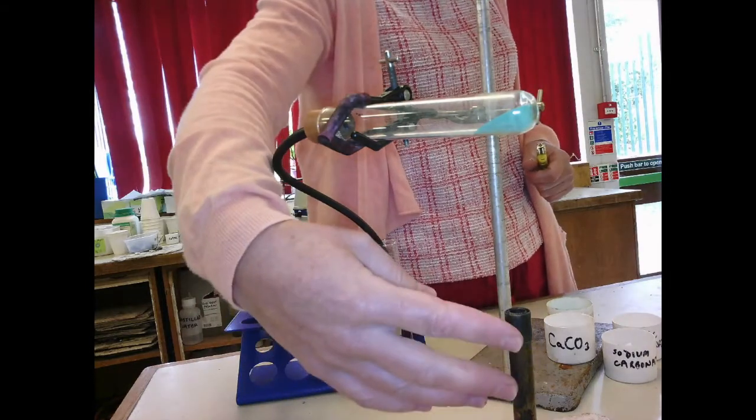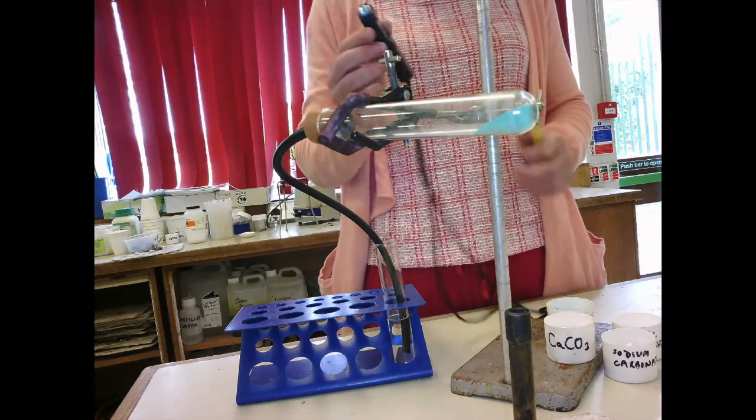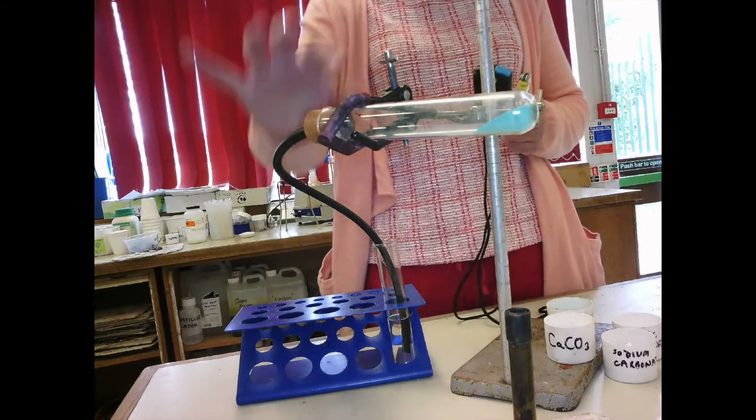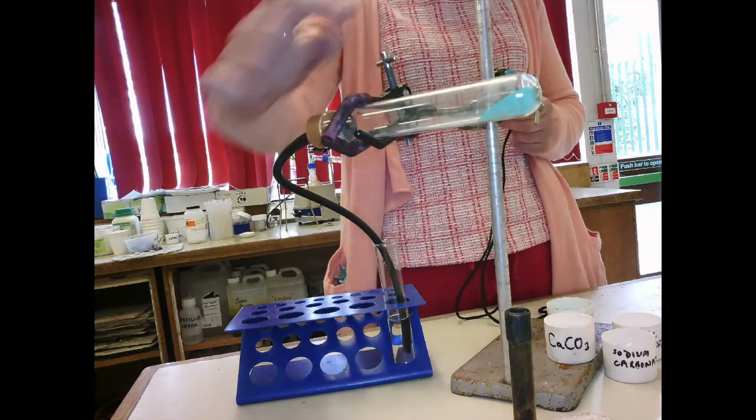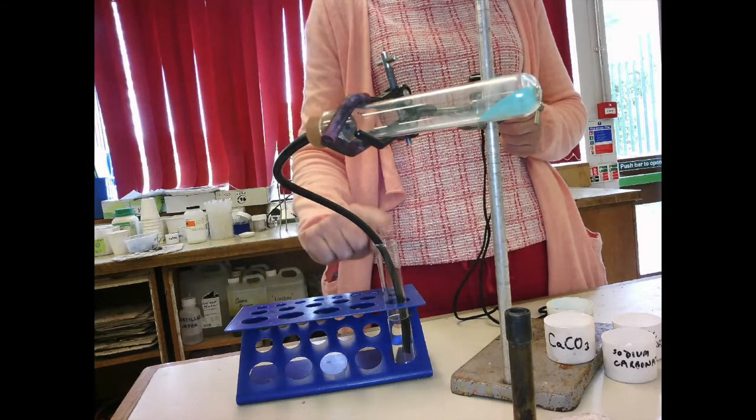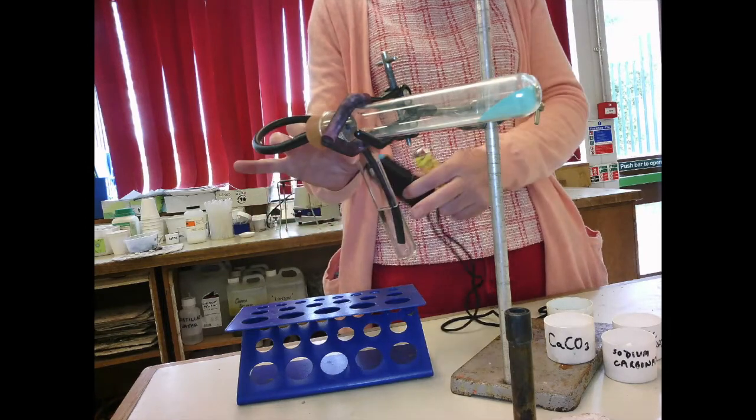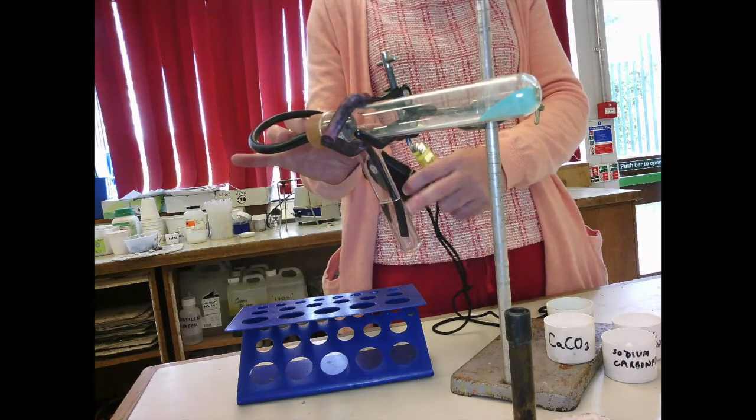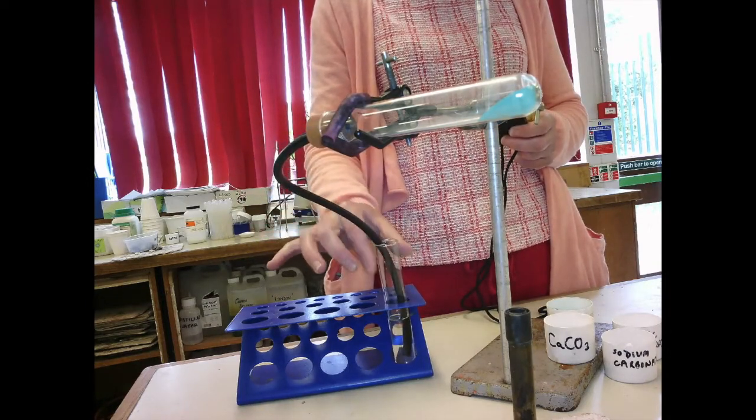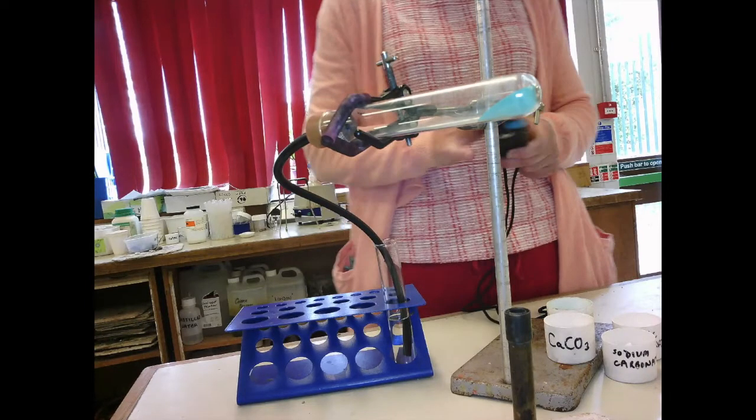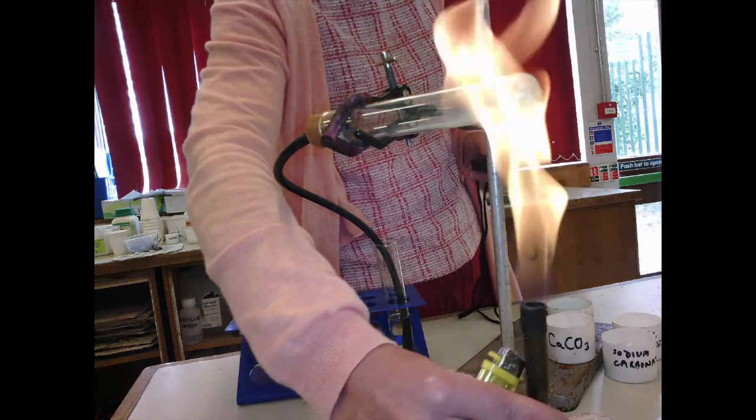I'm going to heat up the copper carbonate with the Bunsen, and I'm going to time how long it takes for this copper carbonate to decompose. Now when it decomposes, copper carbonate will make carbon dioxide gas. Carbon dioxide gas will bubble into this lime water, and I time the time taken for this lime water to start changing milky.